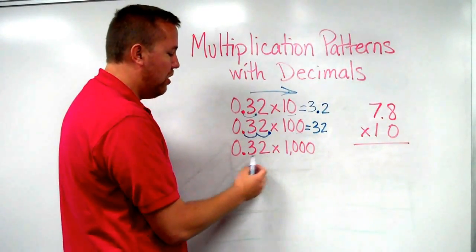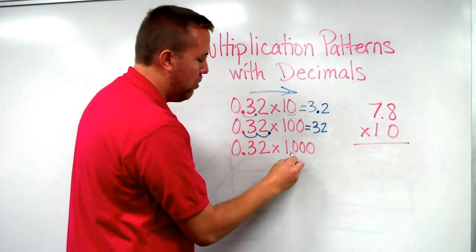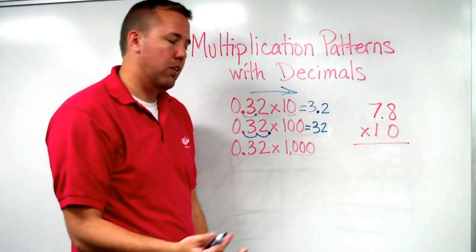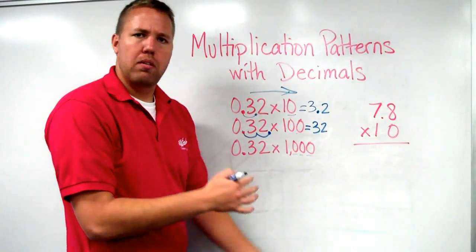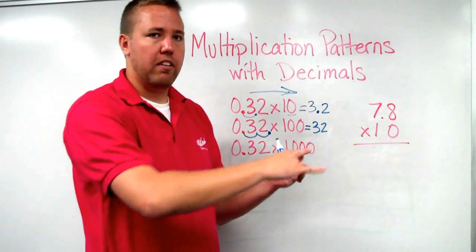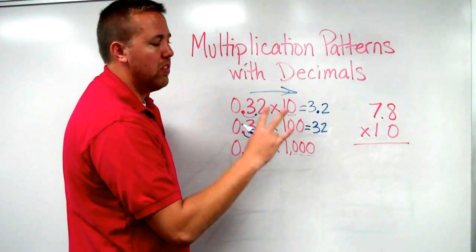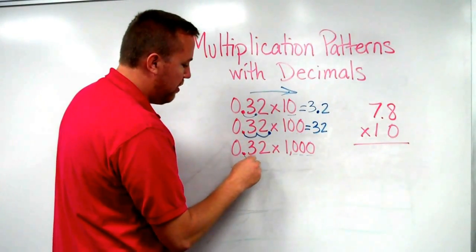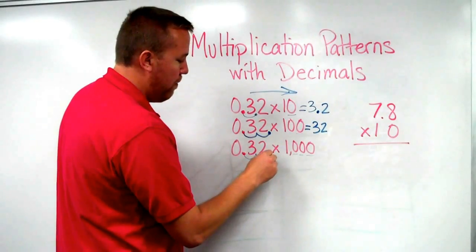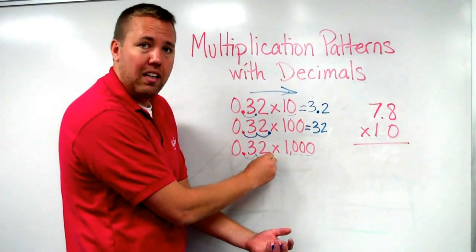Now, 0.32 times 1,000. There are one, two, three 0s. So when we're multiplying whole numbers with 0s, we have those three 0s on to the end. But this, we move the decimal place three times. So now this gets a little tricky because I move it once, twice, and then there's nothing there. What do I do?